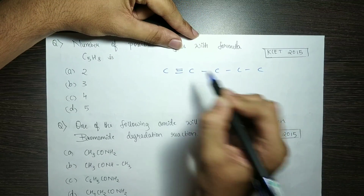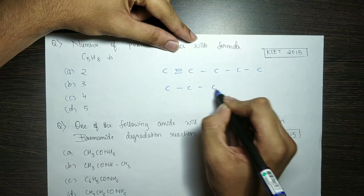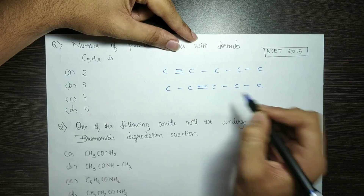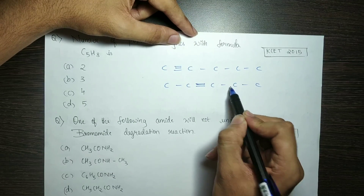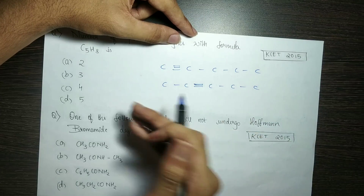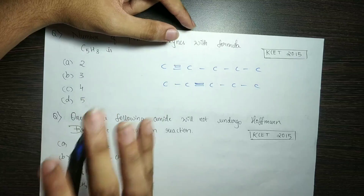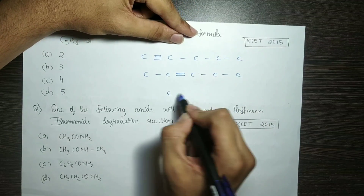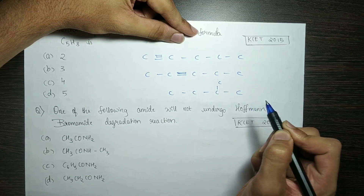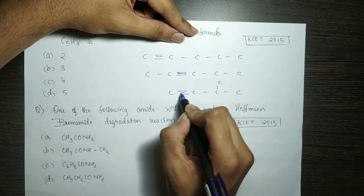One of the alkyne structures is this. Here we have to do triple bonded. If we have to do triple bonded, we can do the same as well. Here we have this structure, so we have two structures. What do we have to do here? We have to branch it. If we have to branch it, we have to place the triple bond.